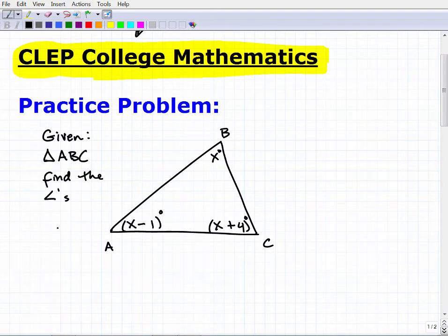So here's my little triangle. I'd like you to find the actual angles of this triangle. So here you got, obviously got some variable expressions. This is X minus one. This is X and this is X plus four. So these are the three angles of this triangle.